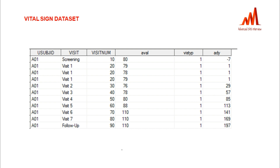For example, this is a vital signs dataset for a first subject — subject zero one. You can see in the screening we get some values; in visit one we have three values, visit two we have one value, and then visit three, four, five, six, seven, and follow-up. These are the visit variable and visit number variable collected from the SDTM vital signs dataset.